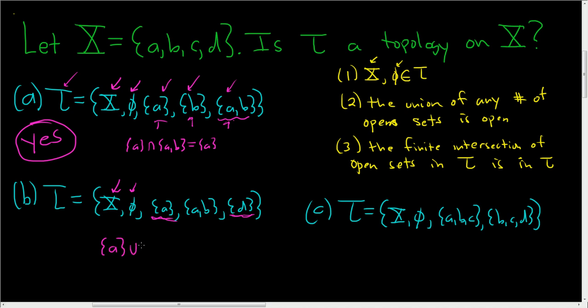If you take A union with this set here, you get the set AD. But this is not in tau. So the answer here is no. Tau is not a topology on X. All you've got to do is find one example where the definition fails, right? This has to work for any number of open sets. It has to be any union.